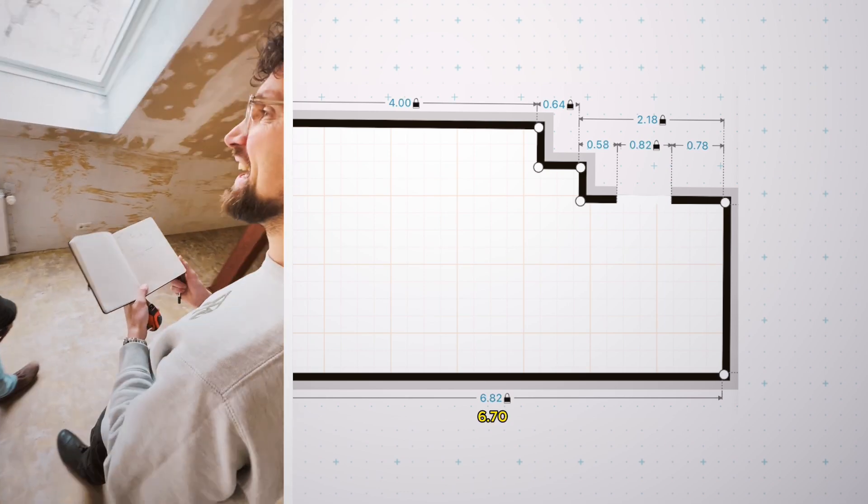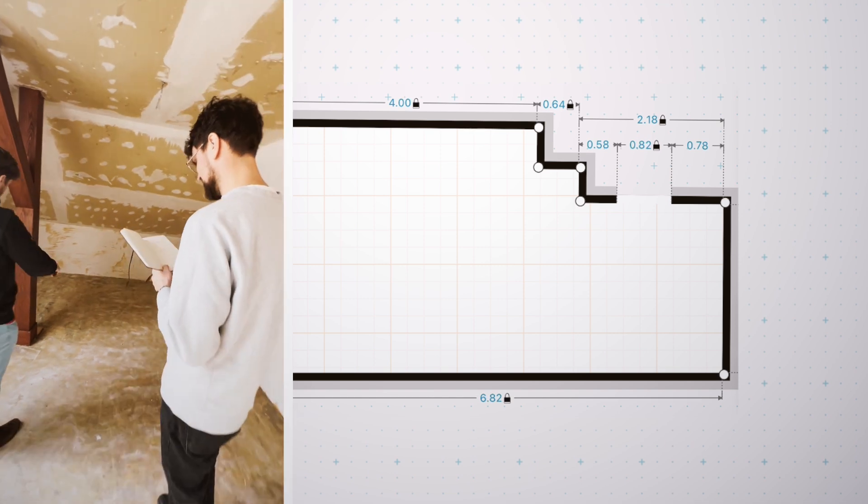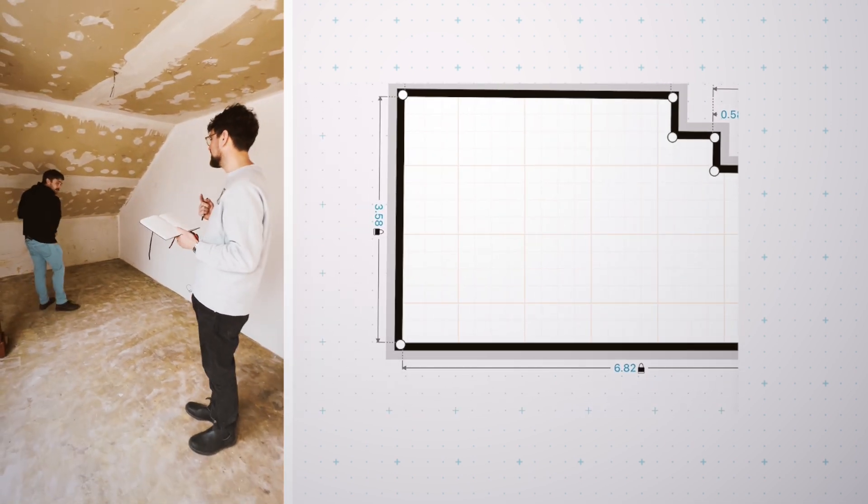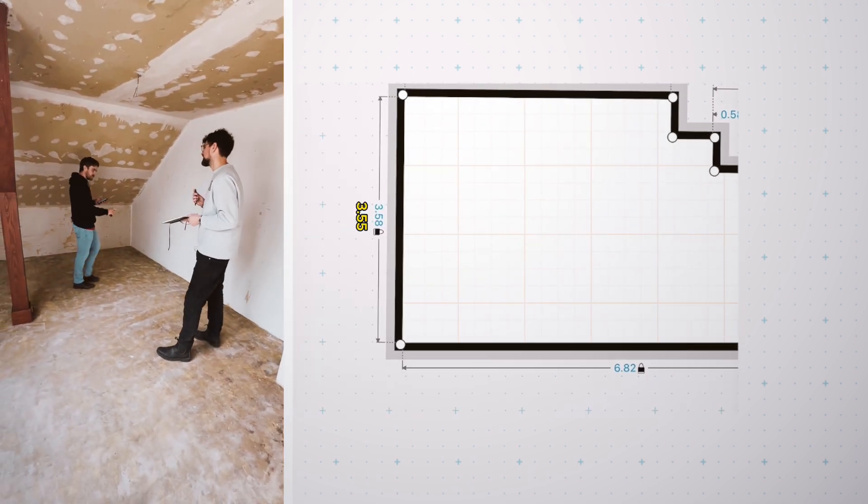So you're off by like 12 centimeters. Not too bad. How about this wall right here? And which one is that? That's 355. That's actually pretty good. I'll give you that one.